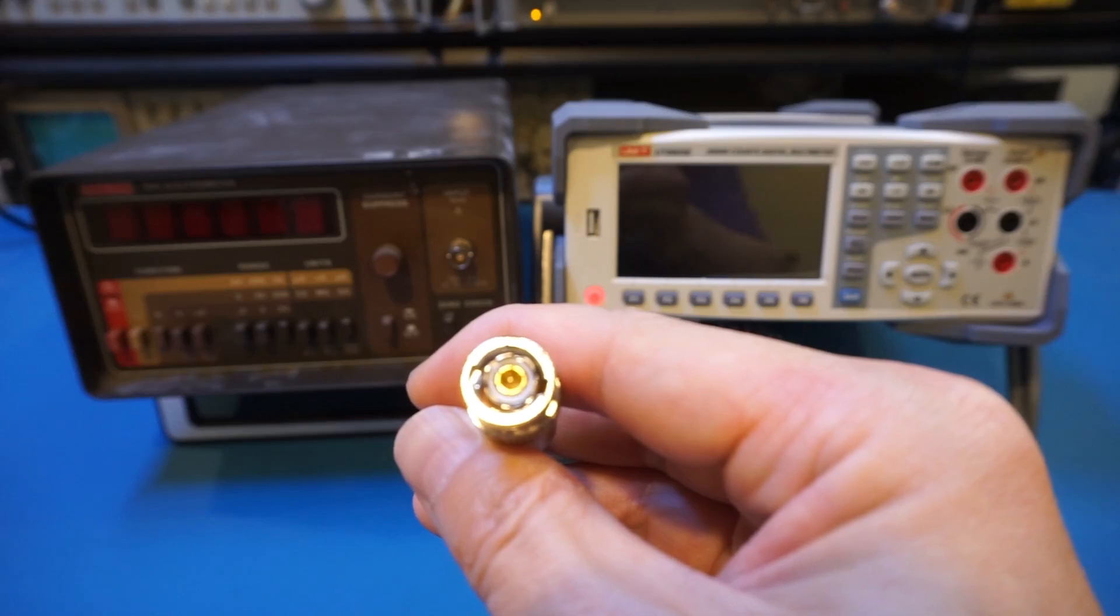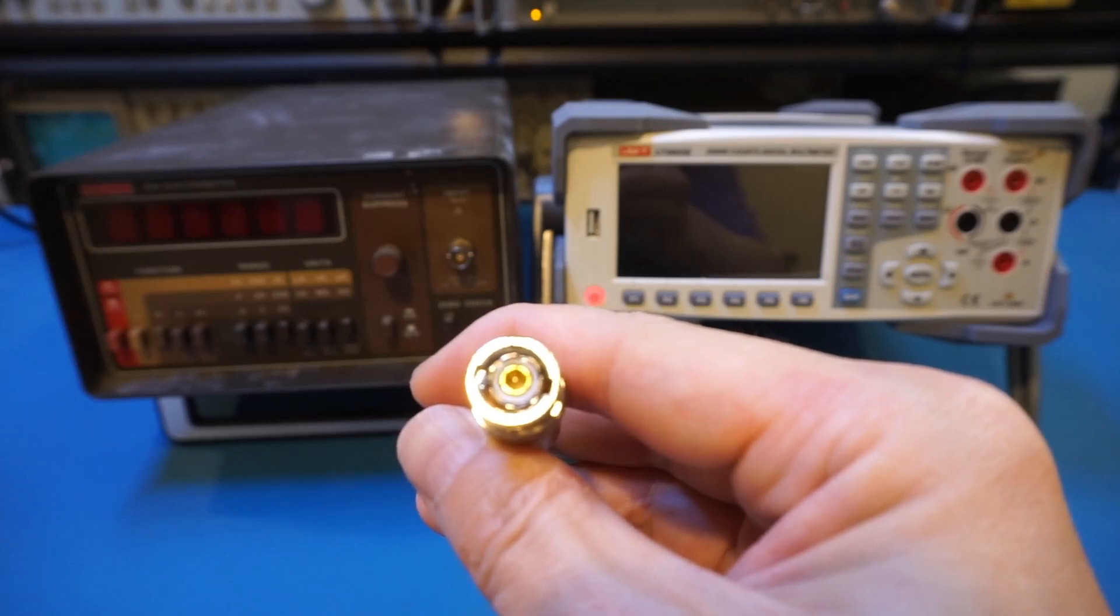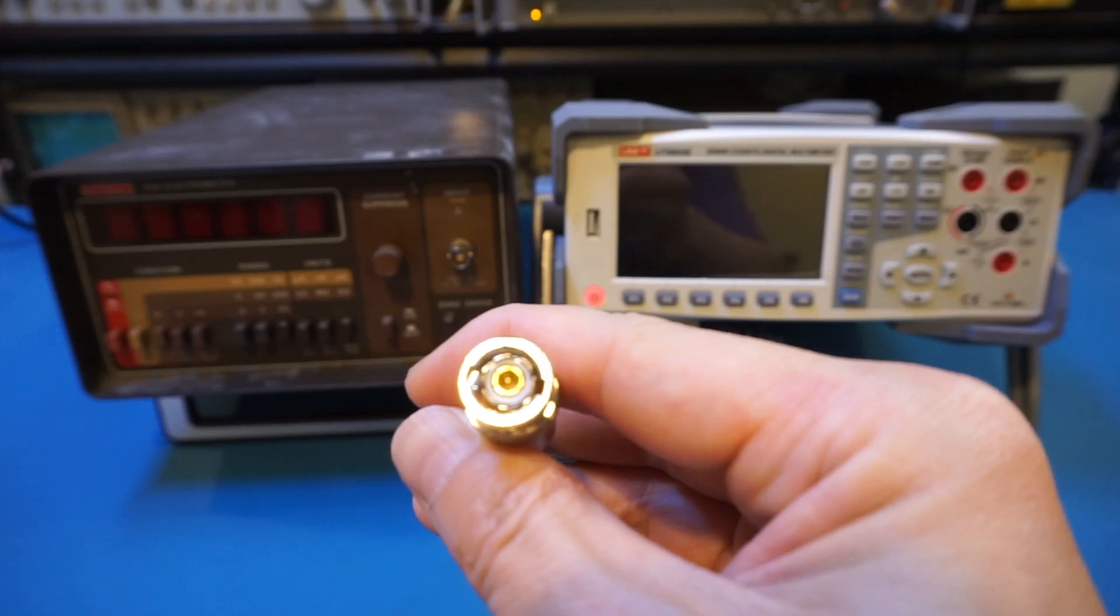The guard is driven to the same potential as the center conductor of the cable, which is where the red alligator clip is connected to. So this eliminates the current leakage to the ground, and also removes parasitic capacitance due to charging and discharging.